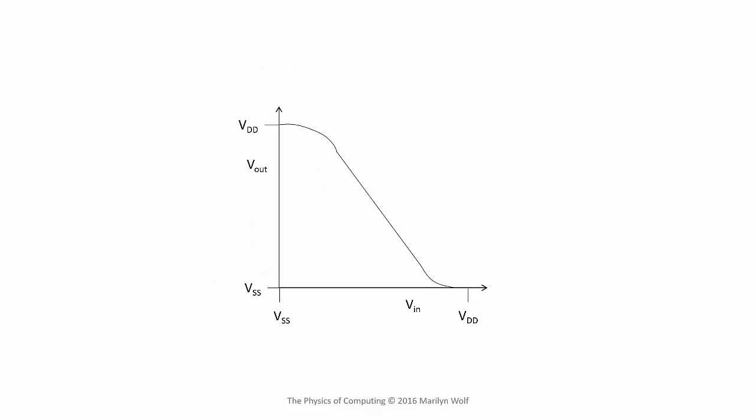We're primarily concerned here with the static properties of the inverter. And one of the important graphs that demonstrates the static properties is the transfer curve. The transfer curve shows the output of the inverter as a function of its input. So this assumes that the input value is stable, and we've let the output value become stable. There's no time involved here.